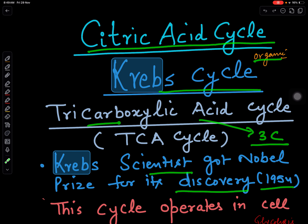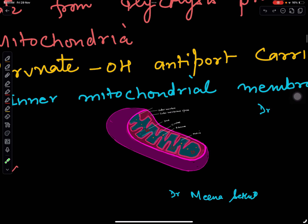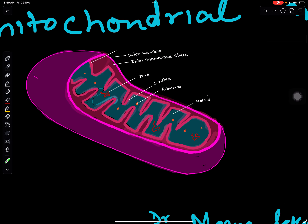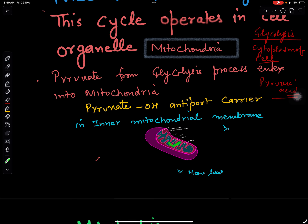The first stable product is three carbons in length, so this is called the tricarboxylic acid cycle or TCA cycle. This cycle operates in the cell organelle mitochondria, which is also called the powerhouse of the cell.